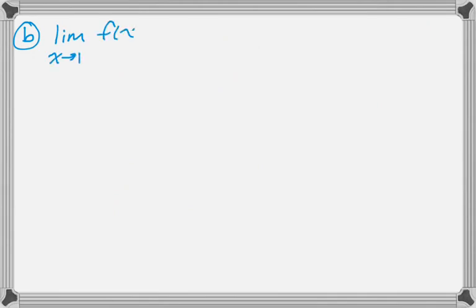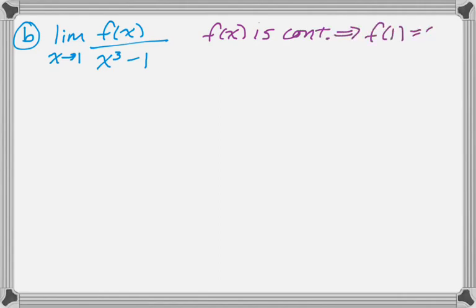Part B, we've got to evaluate a limit. It's kind of a neat problem. It ends up a L'Hopital's problem, because right now if we try to evaluate it, you'd have f(1) over 1 minus 1. Since f(x) is continuous, we know that f(1) is 0, we can just substitute it in. So we get an indeterminate form, 0 over 0, so we're going to use L'Hopital's.